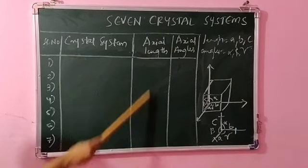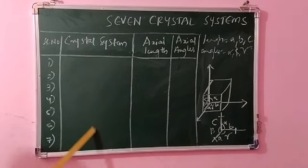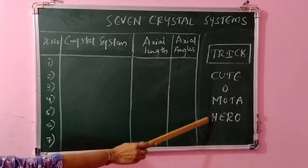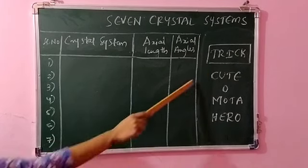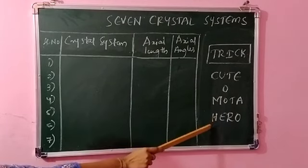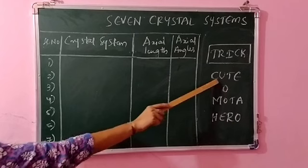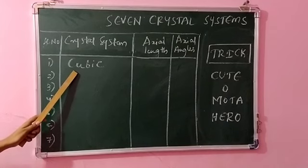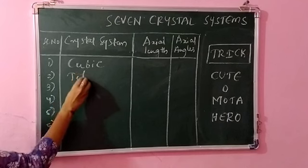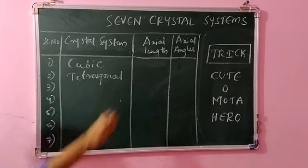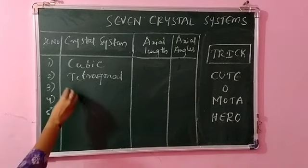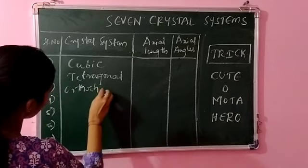Based on axial lengths and axial angles, there are seven types of crystal systems. We are going to study them one by one with an easy trick. The short trick for remembering the seven crystal systems is the statement: 'Cute O Mota Hero.' Here, Cu indicates cubic — I've taken the first two letters. T stands for tetragonal — again the first two letters.